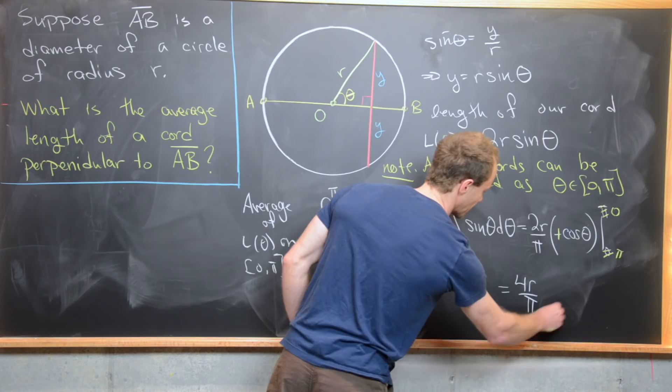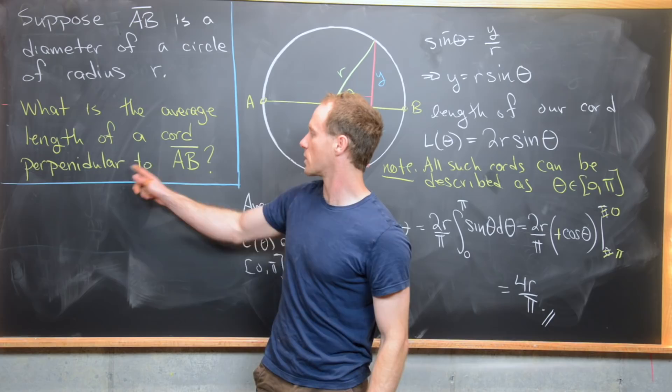So we've answered our question. The average length of a chord perpendicular to AB is 4 times the radius divided by pi. And that's a good place to stop.